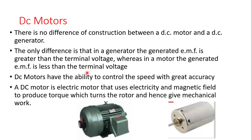Today we are going to focus our attention on another type of DC machine known as the DC motor. When you talk about DC motors, there is no difference in construction between the DC motors and DC generators that we discussed in our previous lectures. The only difference is that in generators, the generated EMF is greater than the terminal voltage, because you generate and then there will be losses along the armature resistance and other resistances depending on the type of connection, before you get your terminal voltage.